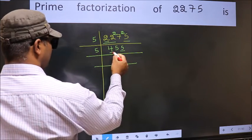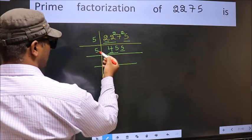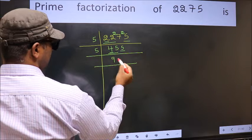First number 4, smaller than 5, so take 2 numbers: 45. When do we get 45 in 5 table? 5 ninths, 45.